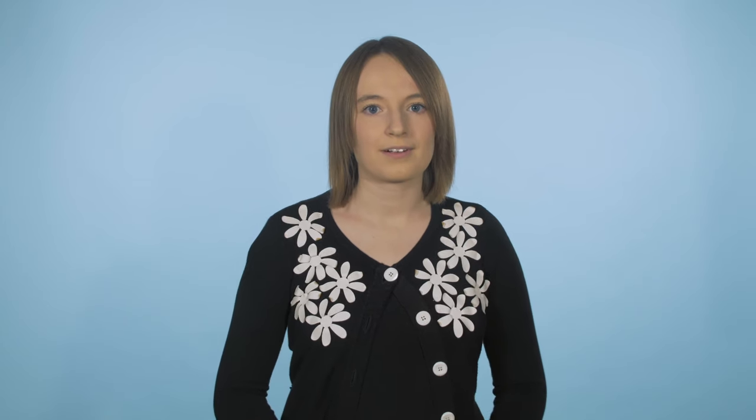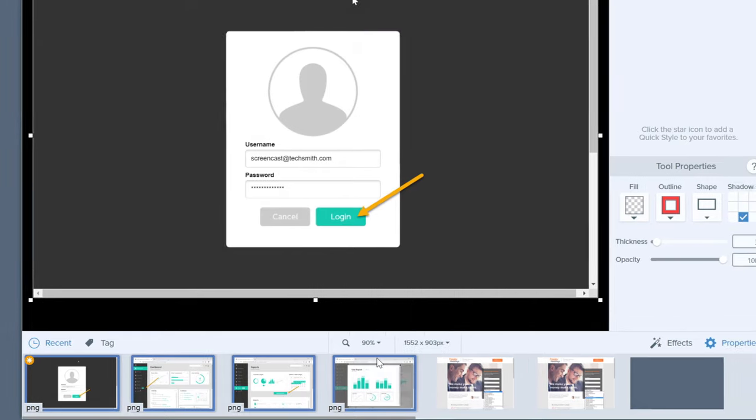Begin by taking screenshots of the process that will be included in the training manual. Next, select those images from the tray, right click, and then select combine in template.